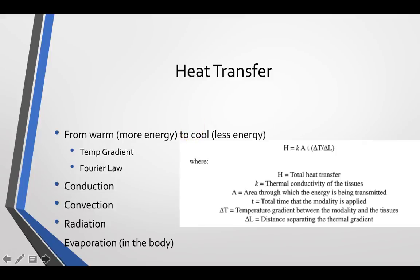As the temperature gradient increases — so as that difference between the temperature of one object and the temperature of the other increases — we get an increase in the speed of the exchange that happens. That's Fourier's Law. If one object is much hotter than another object, it's going to have a higher speed of that exchange than two objects whose temperatures are closer together.